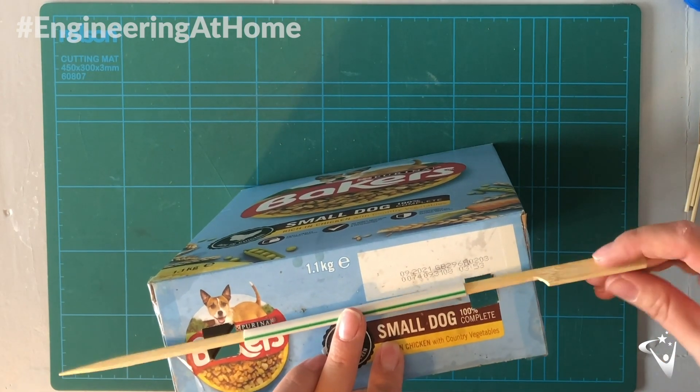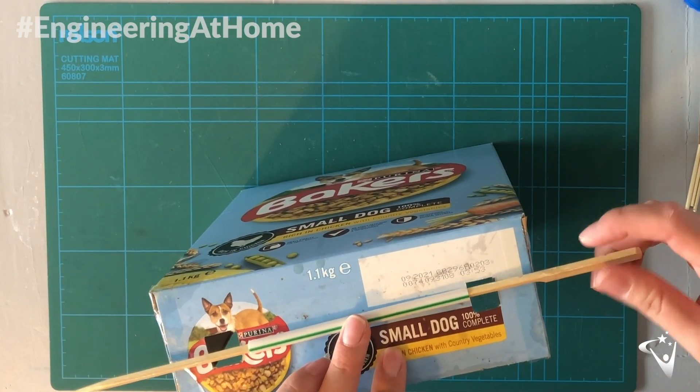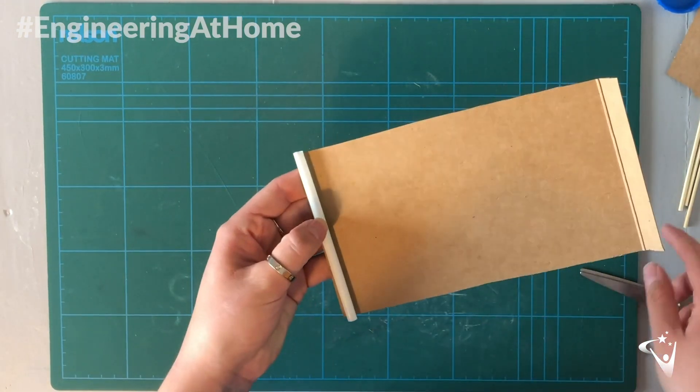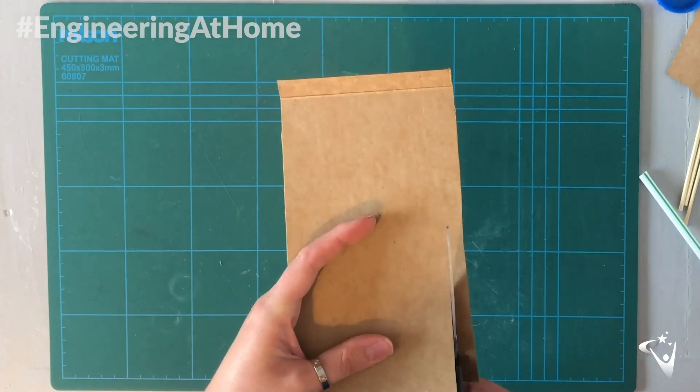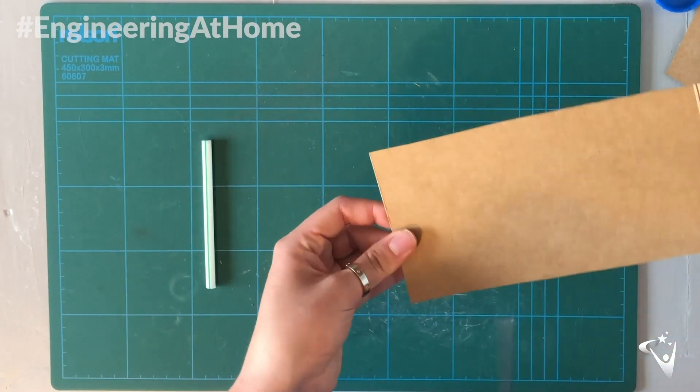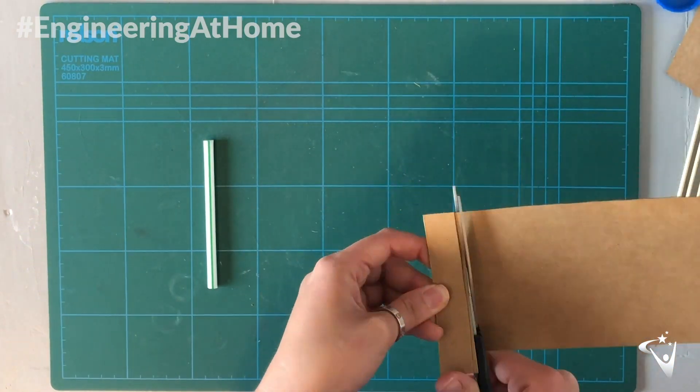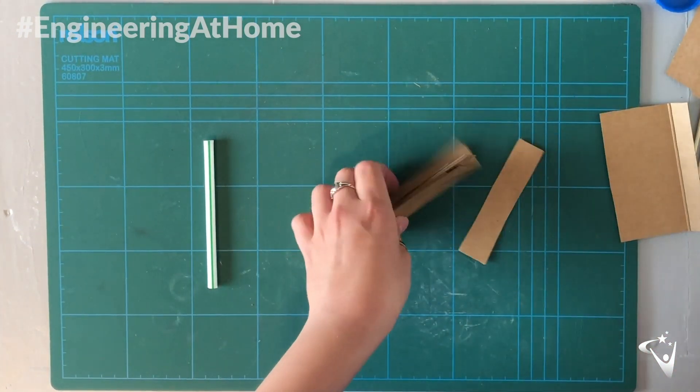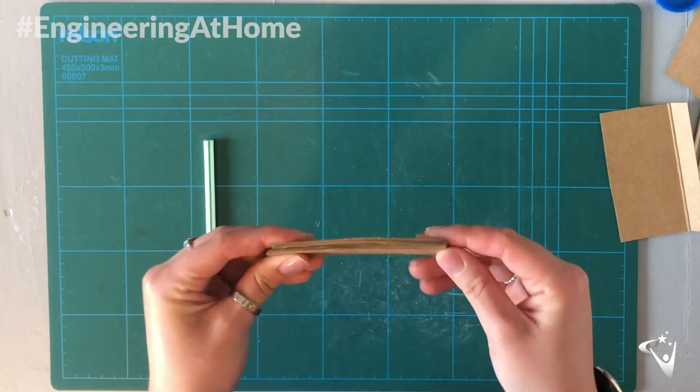But you might notice it can't spin freely without hitting the box so we want to raise it up slightly. Then take some spare cardboard that's slightly shorter than your straw and cut out lots of narrow strips. These don't have to be neat or identical. You can then stack them on top of each other and this will act as a platform for your straw to sit on.